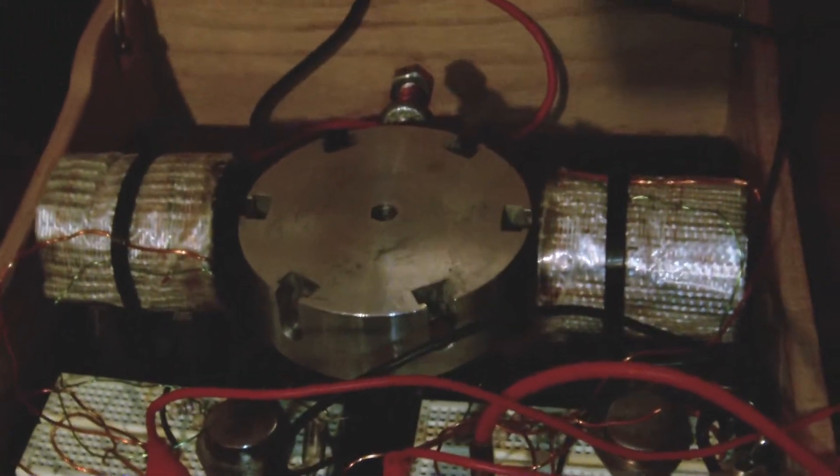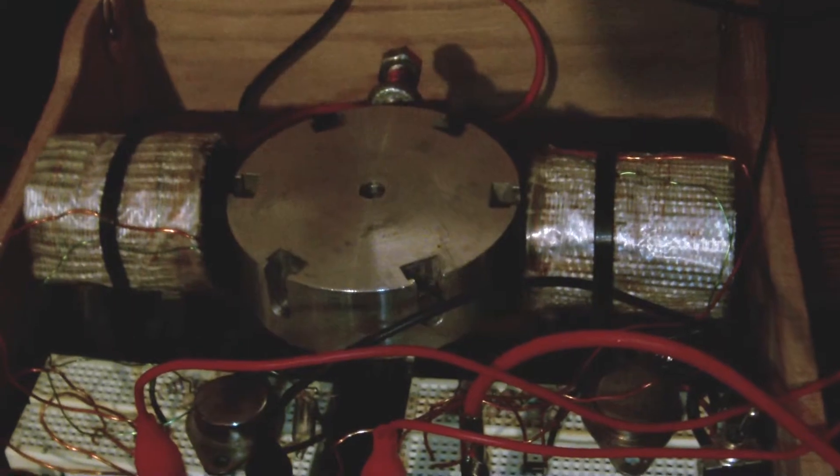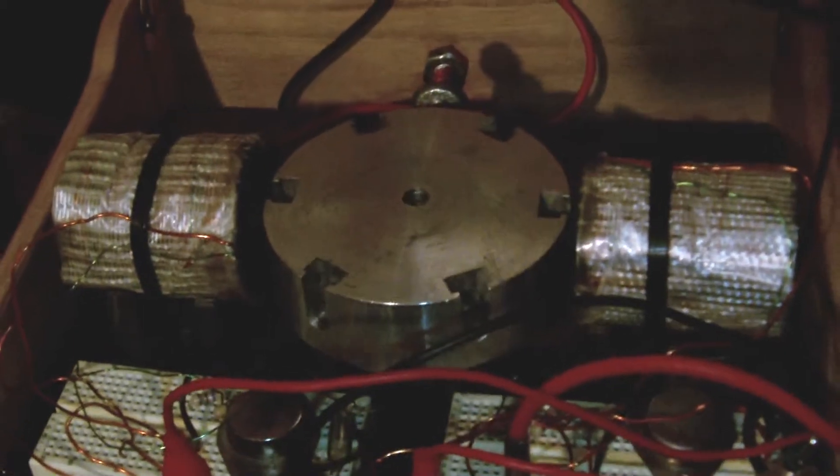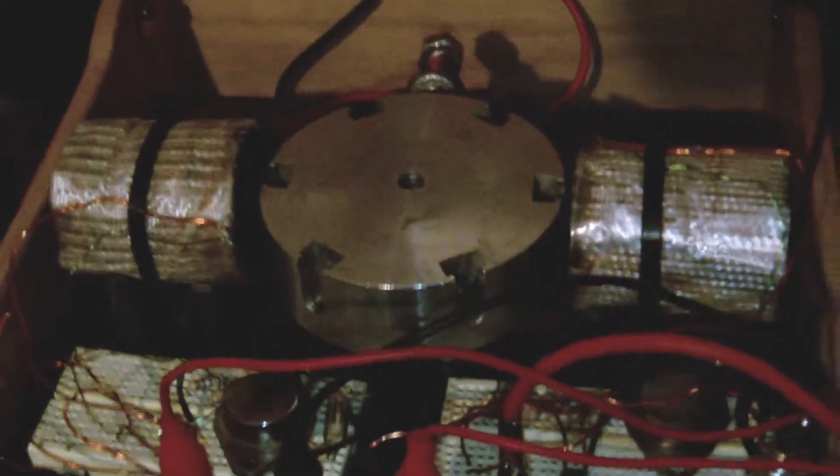This is similar to a magneto on your lawnmower back in the day. It would gather the energy. The points would collapse the coil. The energy would go through a condenser and then to the plug to fire it. And that's pretty much what this is. It's just the motor too. These are bifiler coils. They have two windings. One for a trigger to pulse the motor and the other one to pick up the energy.